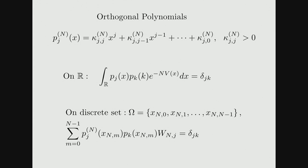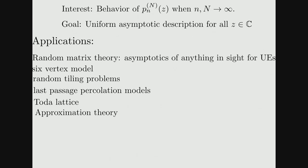The interest is in studying the behavior of these polynomials when degree n and parameter capital N go to infinity. The goal is a uniform asymptotic description for all z in the plane. The applications I wrote down are mostly for the discrete case: the first is random matrix theory, where you can compute the asymptotics of any statistical quantities for unitary invariant ensembles using orthogonal polynomials. The rest are discrete orthogonal polynomial applications or orthogonal polynomials on a curve in the plane.